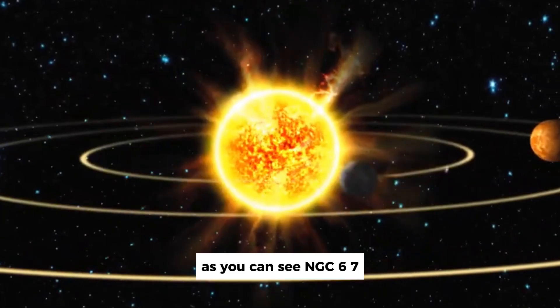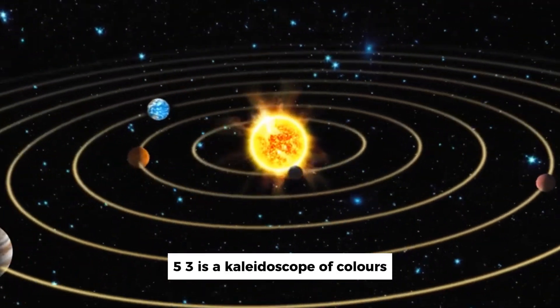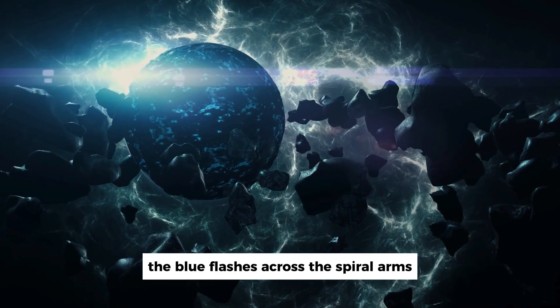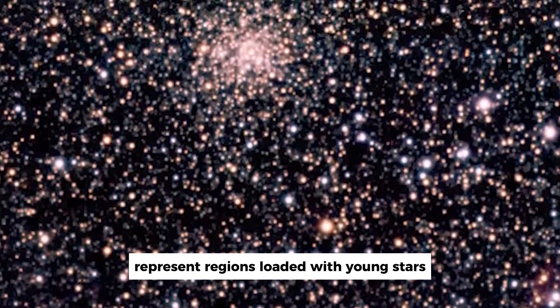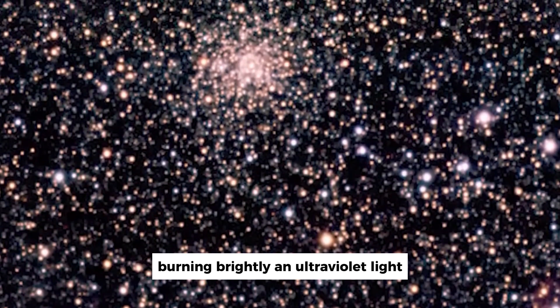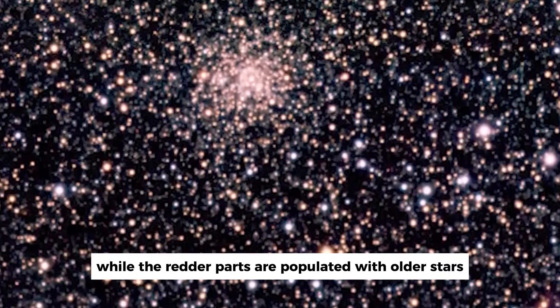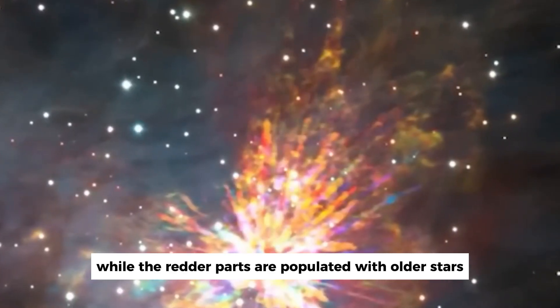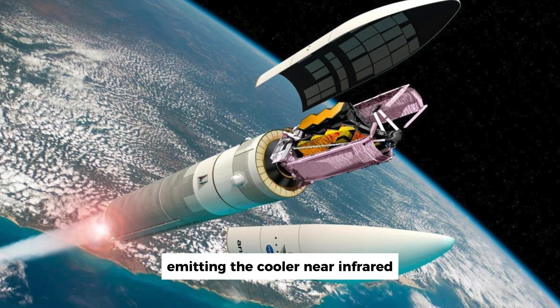As you can see, NGC 6753 is a kaleidoscope of colors. The blue flashes across the spiral arms represent regions loaded with young stars burning brightly in ultraviolet light, while the redder parts are populated with older stars emitting the cooler near-infrared.